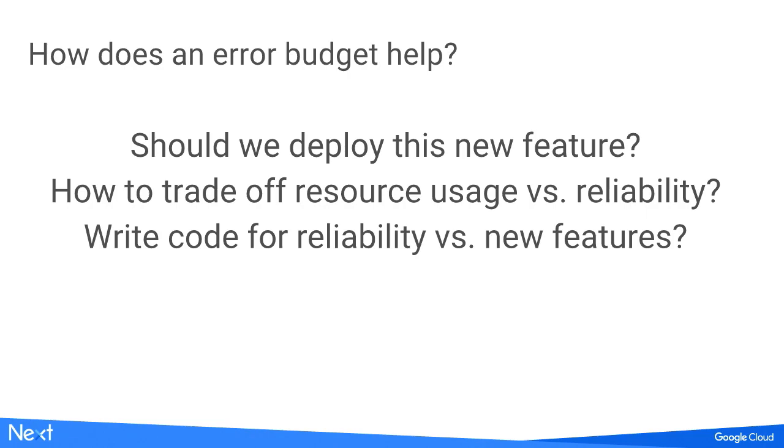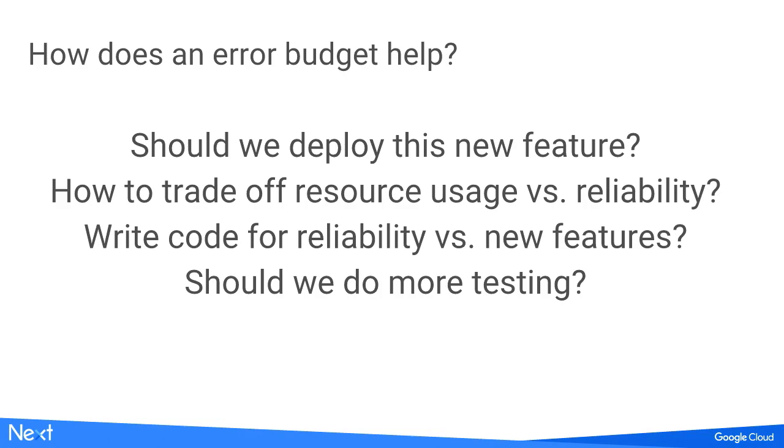Should developers be writing awesome new features or code which makes the service more reliable? Look at your error budgets. Are you consuming all of your error budget month after month? Then invest more in reliability. If you're well within your error budget, bring on the features. Should we do more testing? If you're consistently releasing without causing outages or consuming your error budget, whatever testing you're doing is good enough — more testing only adds cost with no value to users. But if releases cause outages or roll back frequently, investing in testing infrastructure is exactly what you should do.